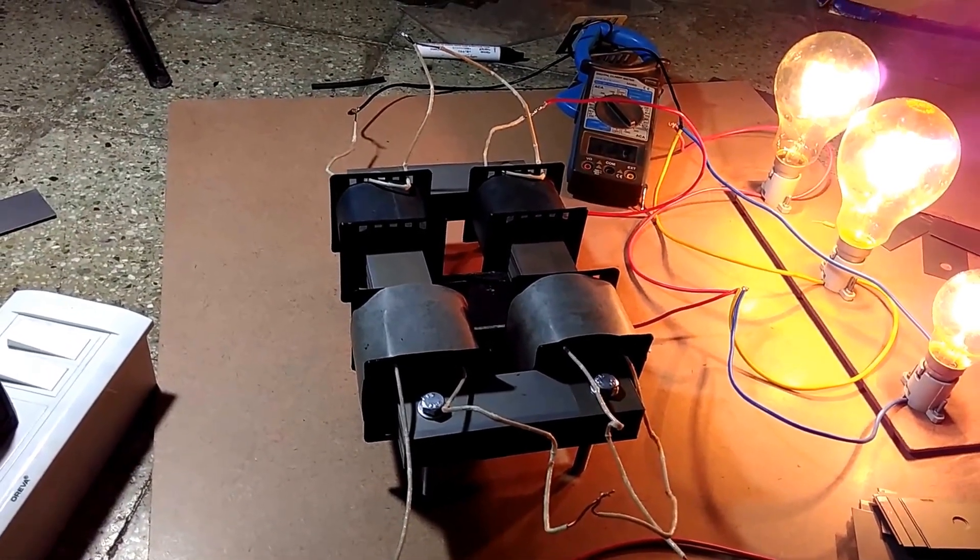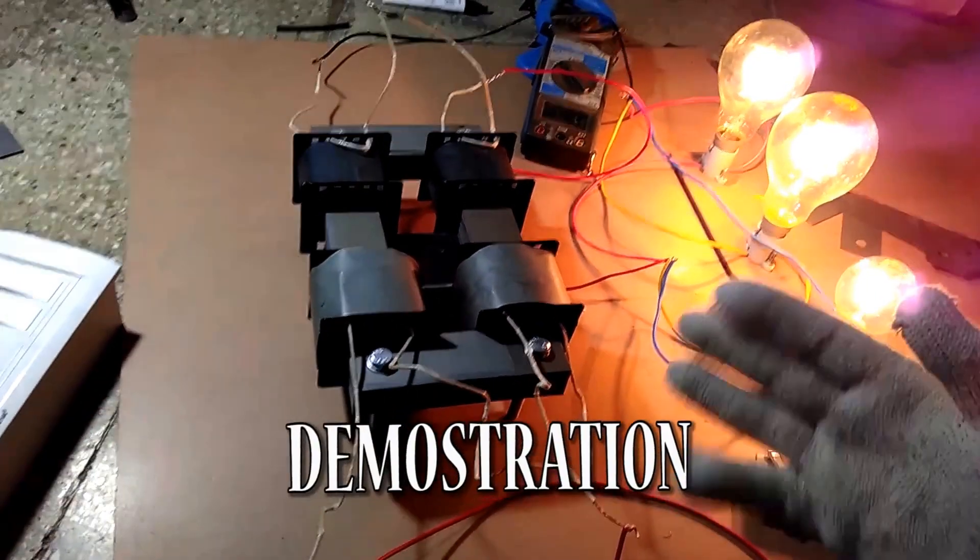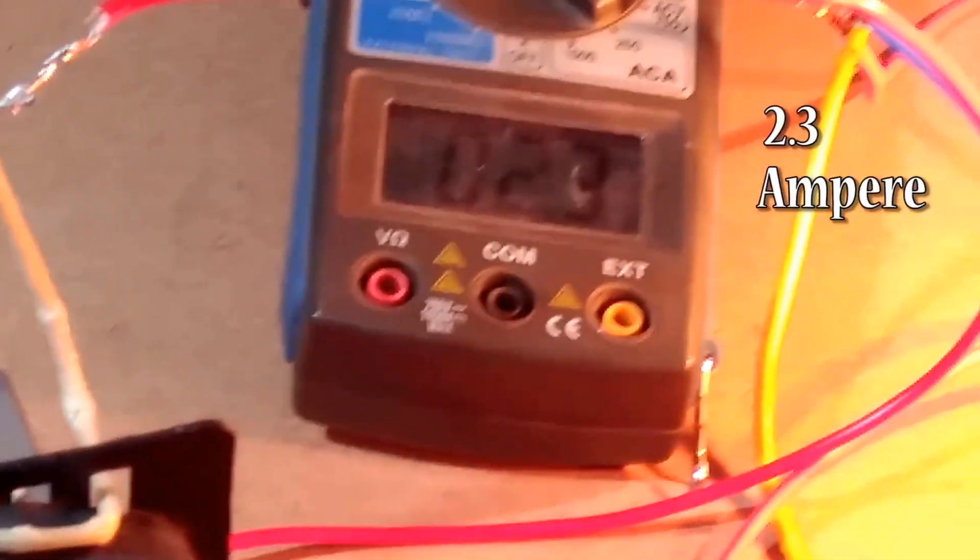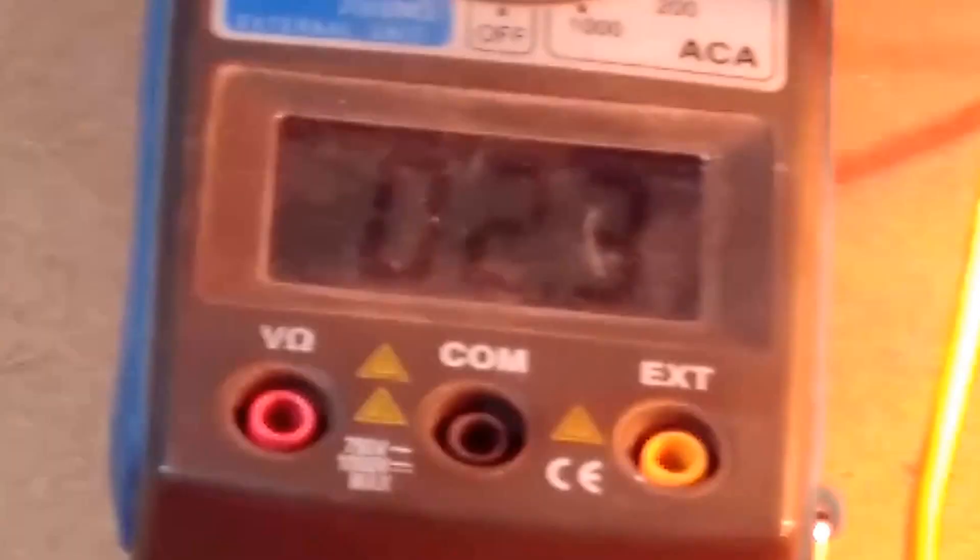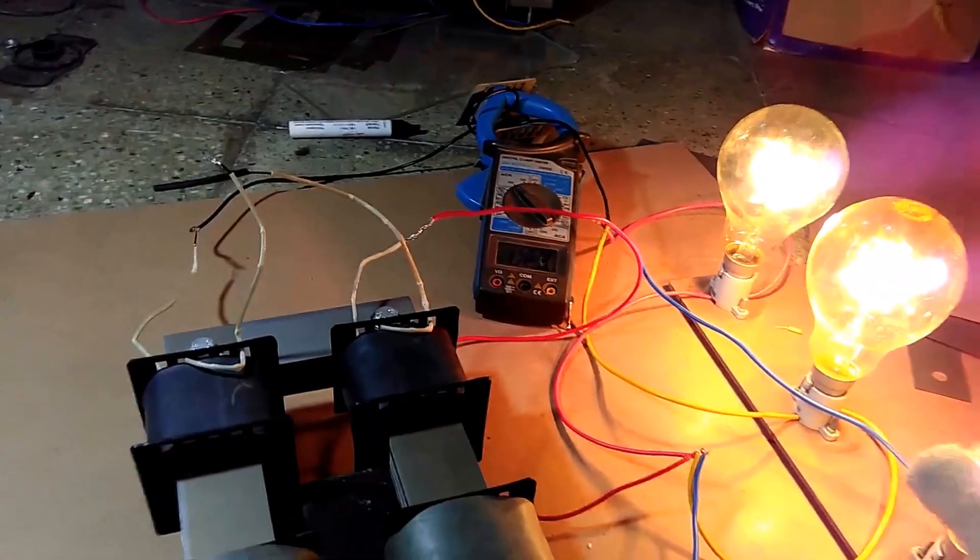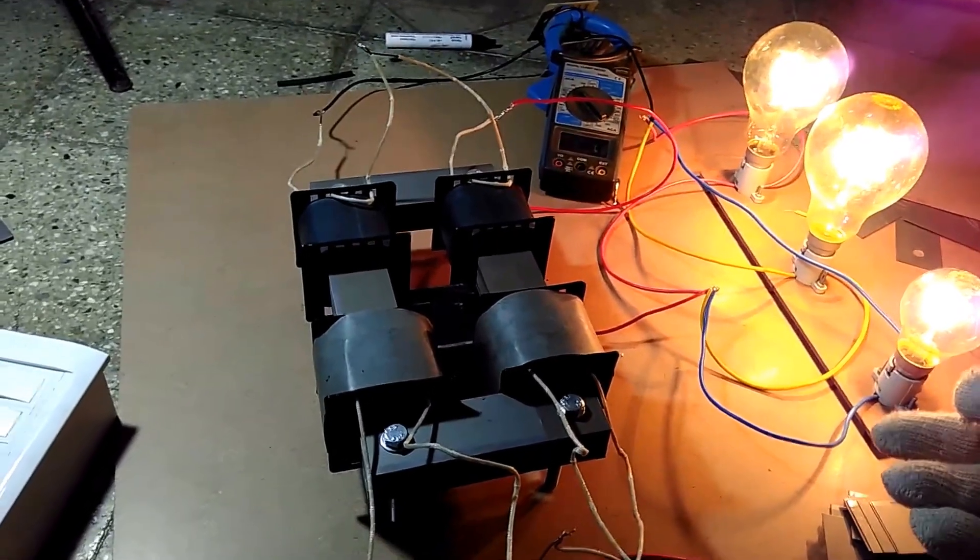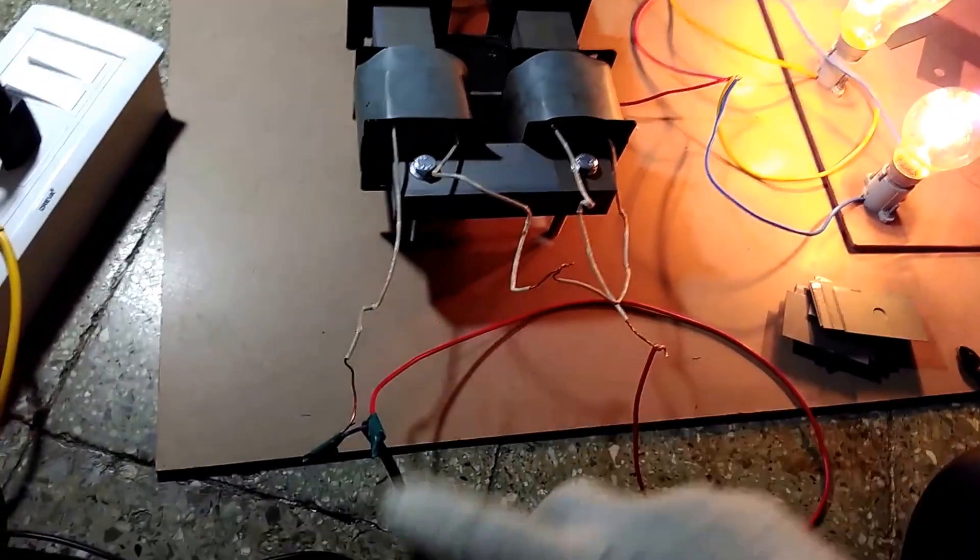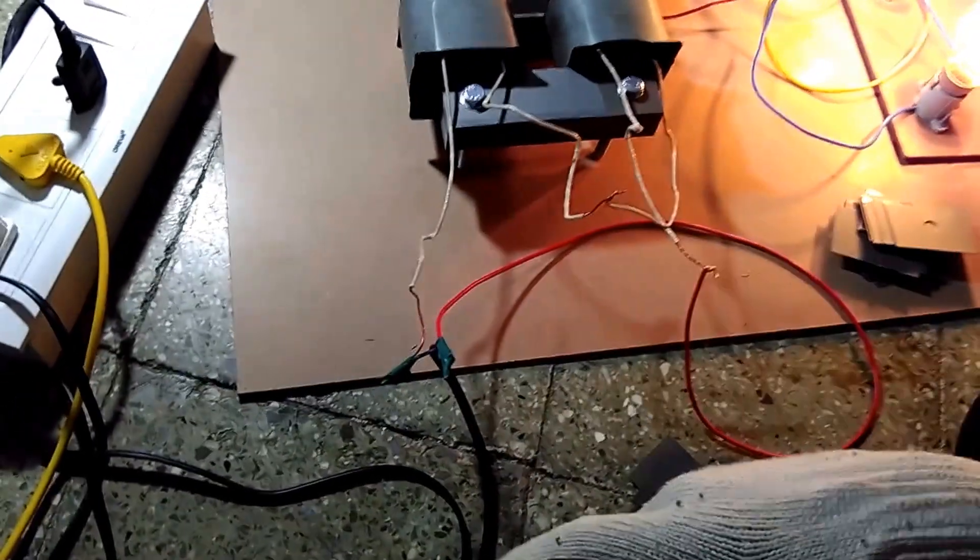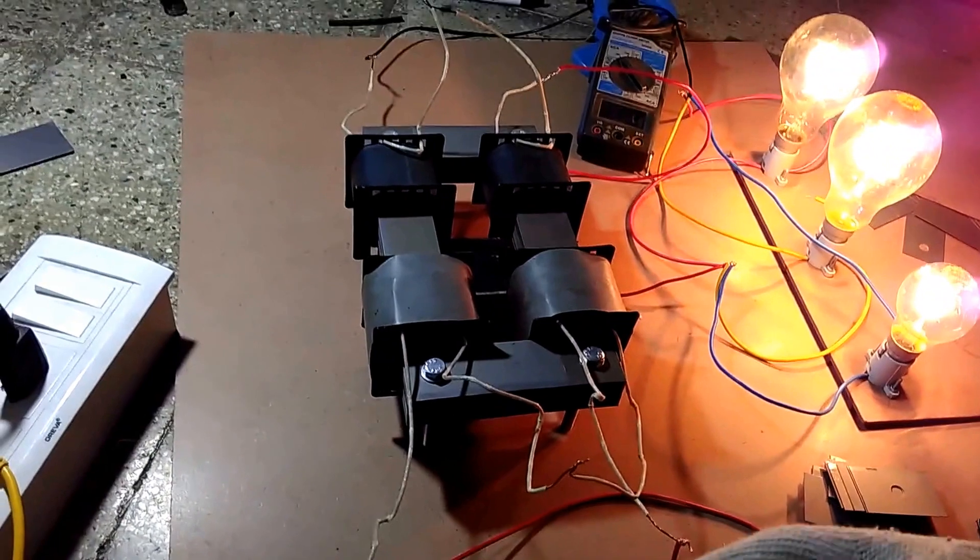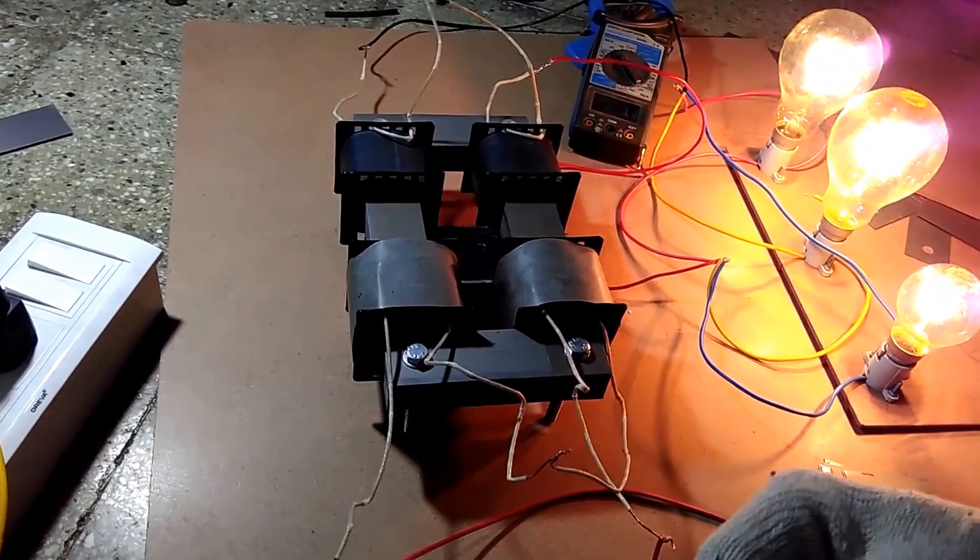Let's see the demonstration. We had already started the setup. The current in the secondary side is 2.3 amps currently. Three lamps - 200 watt, 200 watt, and 100 watts - are connected as load. Primary supply is 237 volts given to the transformer, and secondary is designed for 130 volts.